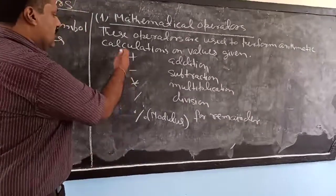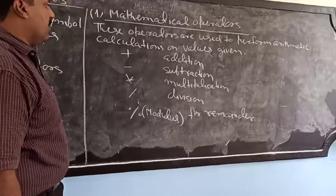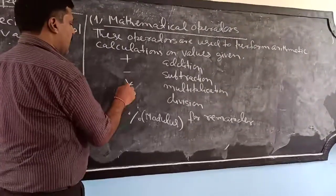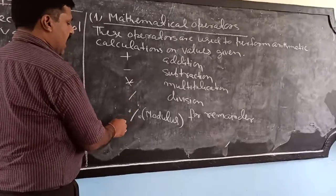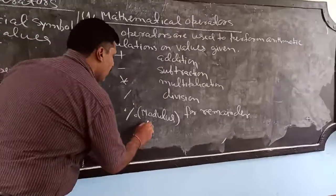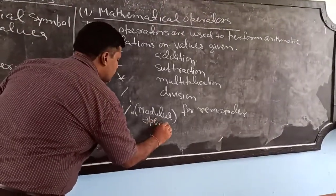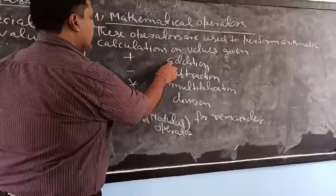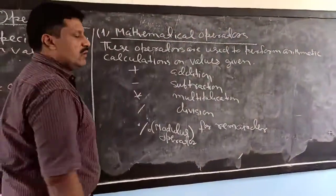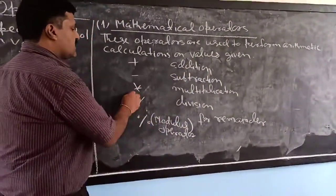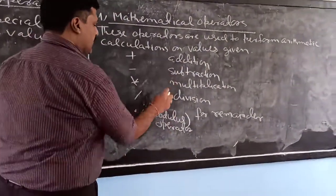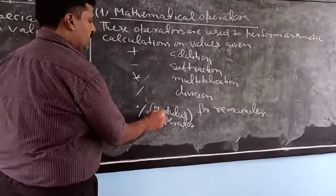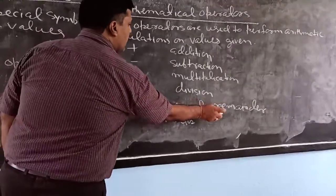We have 5 mathematical operators in Java: plus, minus, asterisk, slash, and the percent sign which is called the modulus operator. The plus sign is used for addition, minus for subtraction, asterisk for multiplication, slash for division, and the percent sign is used to find the remainder.